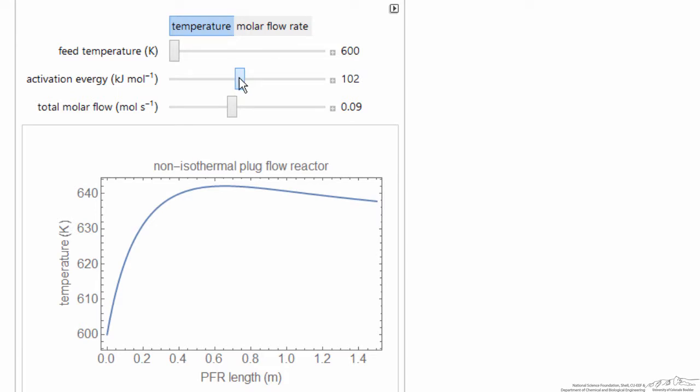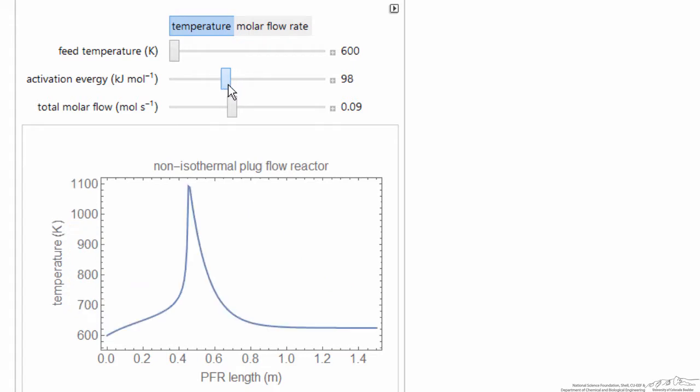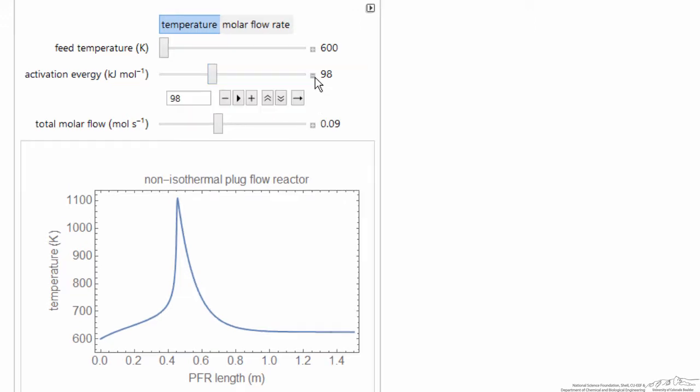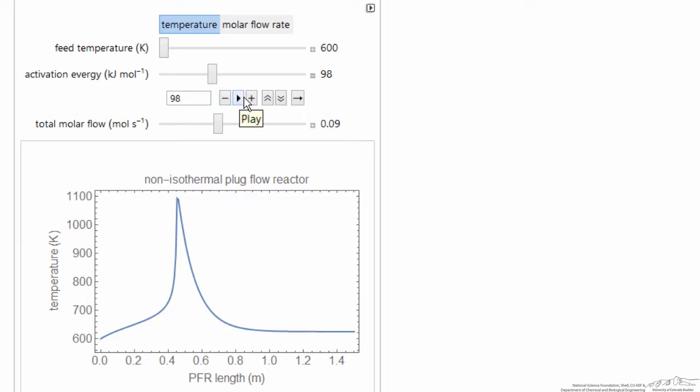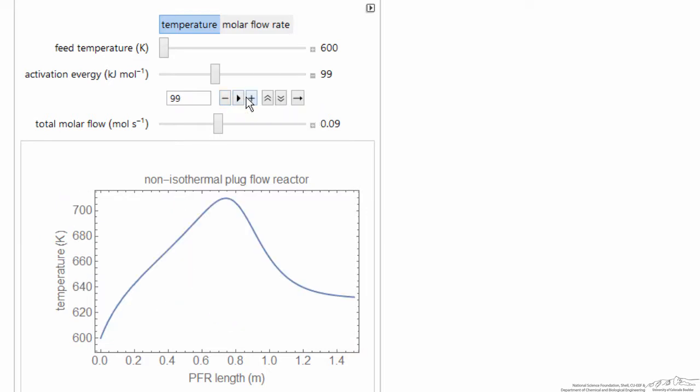As I decrease the activation energy, I'm going to reach a point where now there's a 100 degree temperature increase, and now there's a 500 degrees. So this demonstrates and perhaps need to step along. Notice activation energy between 98 and 99, that's dramatic parametric sensitivity, and of course we don't usually know activation energy that accurately.